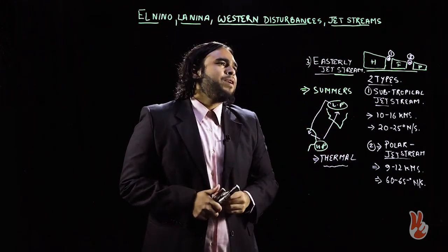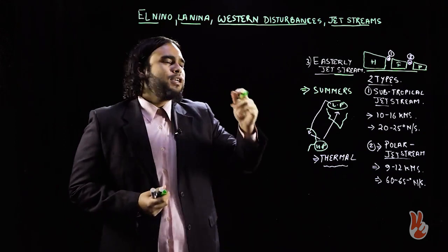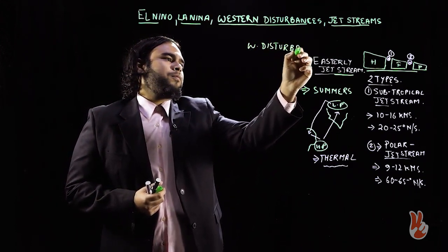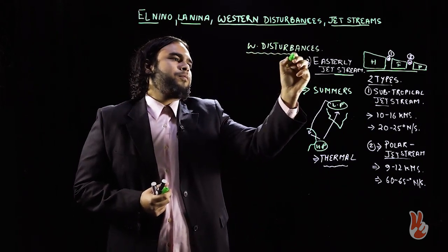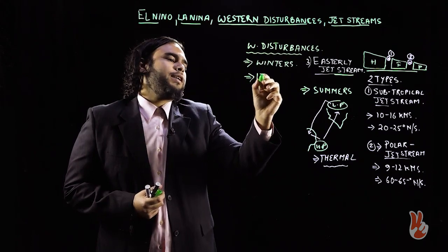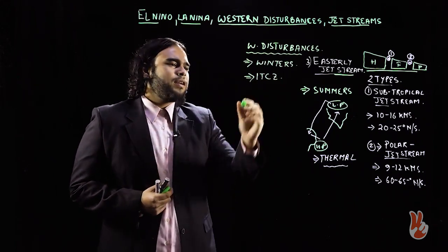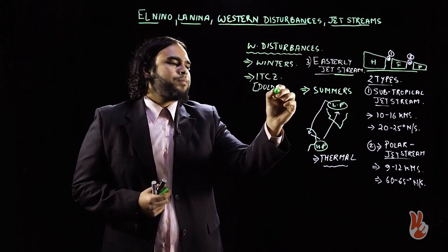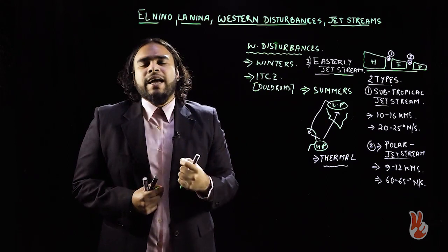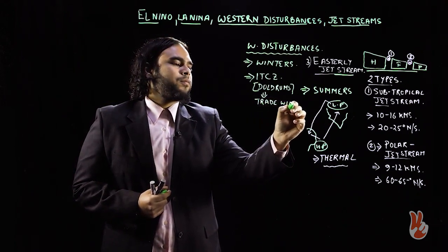So that covers jet streams. Now we can understand western disturbances. This phenomenon occurs during winters and is related to the ITCZ — the Intertropical Convergence Zone, also called the doldrums. The ITCZ is where trade winds merge or converge into each other.